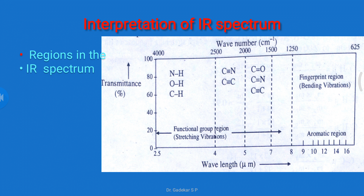NH, OH, and CH are lighter molecules with a small reduced mass, so they show the highest frequency. Then come C≡N (nitrile), C≡C (alkyne), and others. This is the functional group region. Then carbonyl (C=O), C=N, and C≡C follow. The second region is the fingerprint region, and the third is the aromatic region, which appears at 10 to 16 micron wavelength.